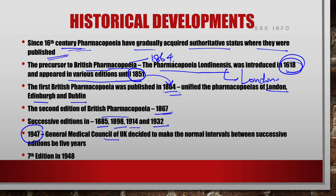There was a major change in 1947. The General Medical Council of UK decided to make the normal interval between successive editions five years. Earlier, a new edition was published whenever the next update was completed — there was no common interval. But in 1947, the General Medical Council of UK decided to have a common interval of five years between successive editions.